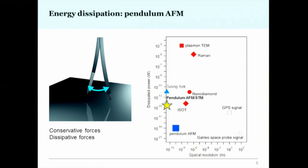The pendulum AFM has advantages over the tuning fork beyond the two orders of magnitude in dissipated power. The tuning fork geometry involves some z-averaging of about 100 picometers. But if we use the pendulum geometry combined with STM, we can achieve z-oscillation of maybe 3 picometers — very small compared to 100 picometers. At that scale we can image the surface with STM, know exactly where we're looking, and study electron dynamics and phase transitions while knowing where we perform the spectroscopy.